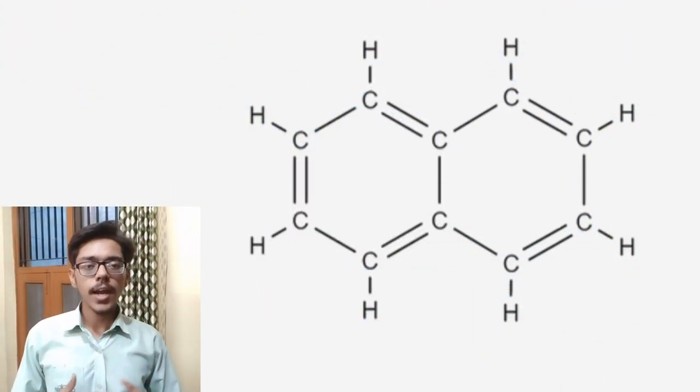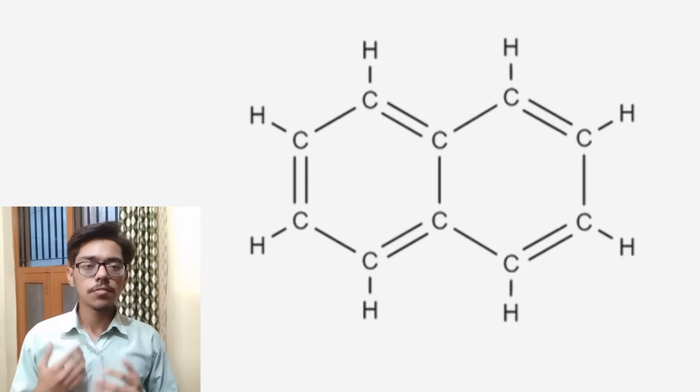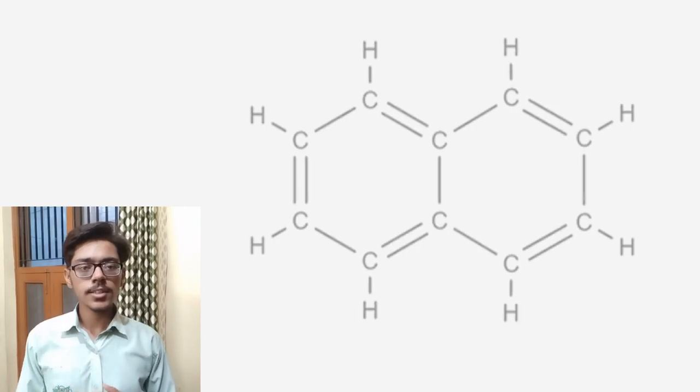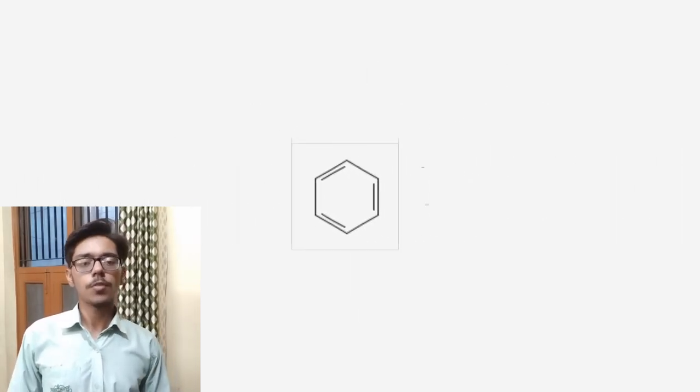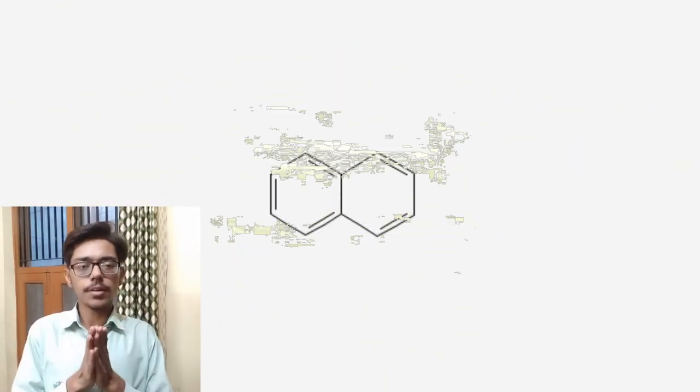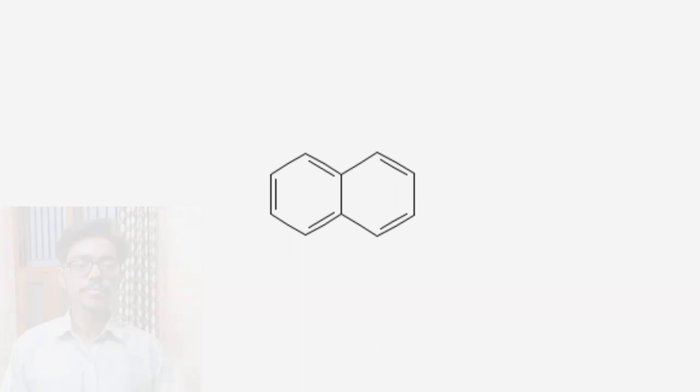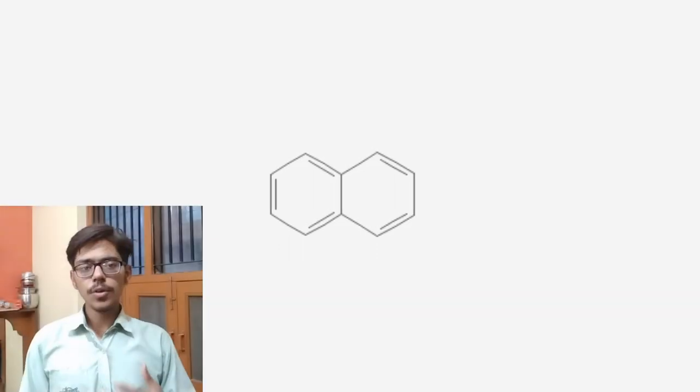Naphthalene at its core is a flat planar cyclic hydrocarbon made up of two benzene rings fused together. Let us now dive into its molecular structure with the help of a clay model.